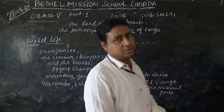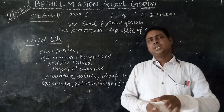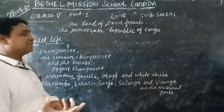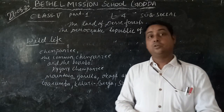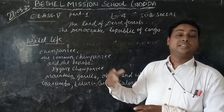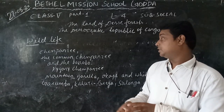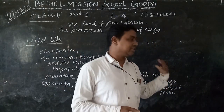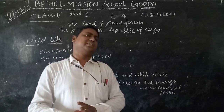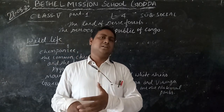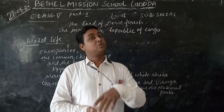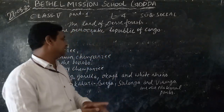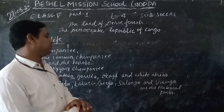In Congo, many animals are found, like the common chimpanzee, gorilla, mountain gorilla, and white rhinoceros. A large number of bird species, insect species, and many varieties of trees are also found in this region. More numbers of animals are found here as well.